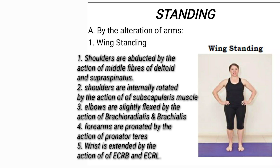The forearms are pronated by the action of pronator teres and the wrist is extended by the action of ECRB and ECRL, i.e. the prime extensors of the wrist.